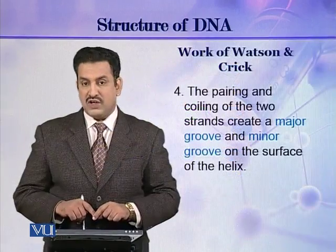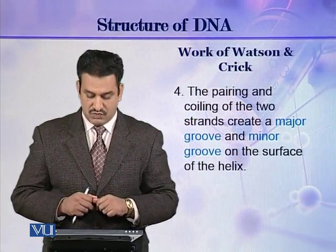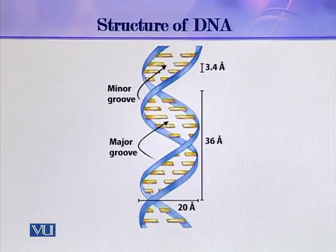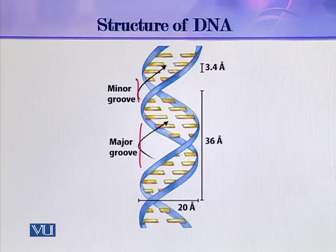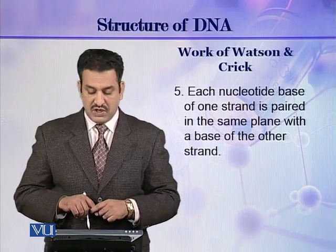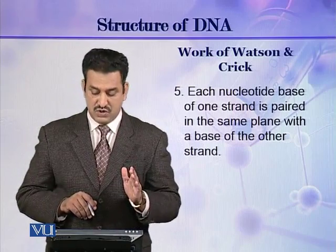The pairing and coiling of the two strands of DNA creates a major groove and a minor groove on the surface of the helix. As you can see in this picture, this is a major groove and this is a minor groove. These two grooves are made because the two strands first join together and then both coil around a single imaginary axis, forming the major groove and the minor groove.